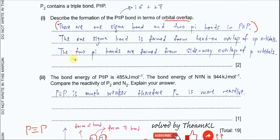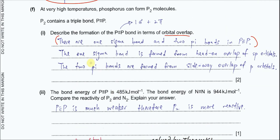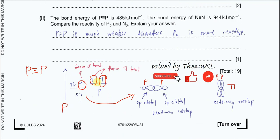Therefore, the one sigma bond is formed from the head-on overlap of SP hybrid orbitals, and the two pi bonds are formed from the sideways overlaps of the unhybridized P orbitals.